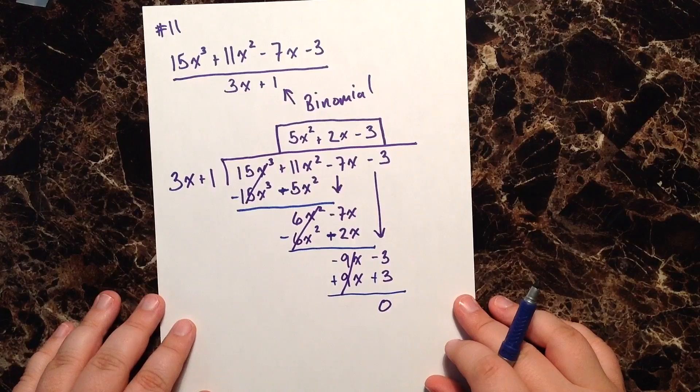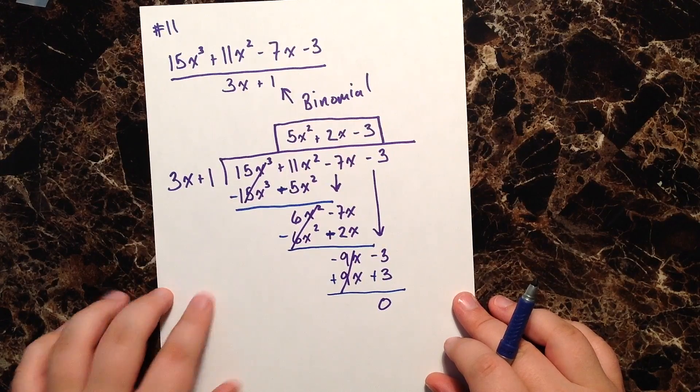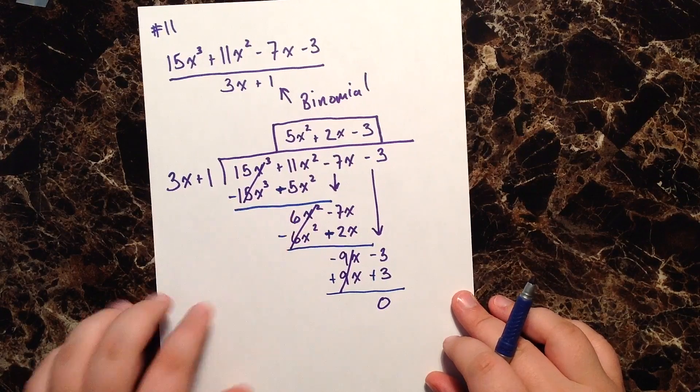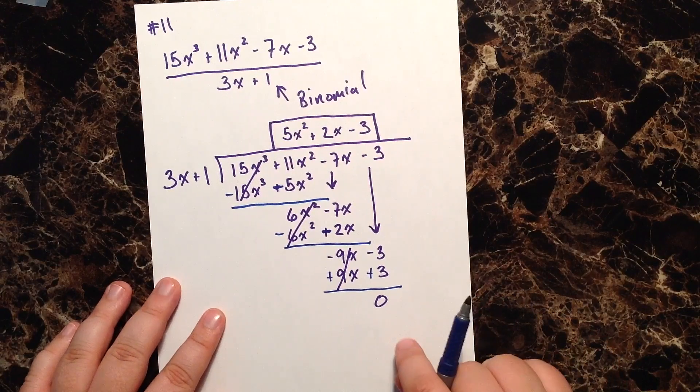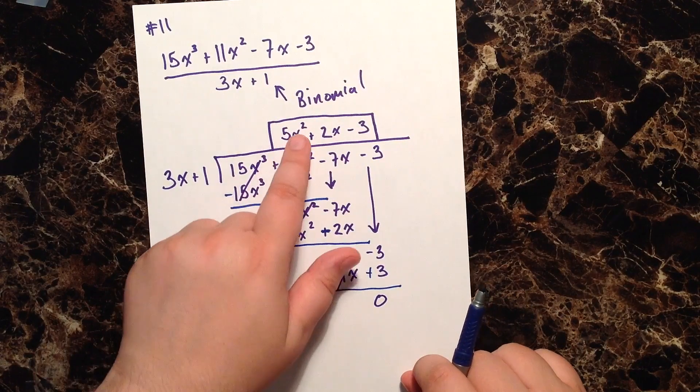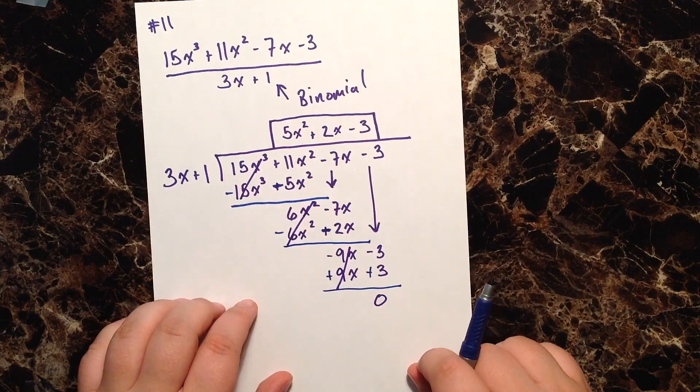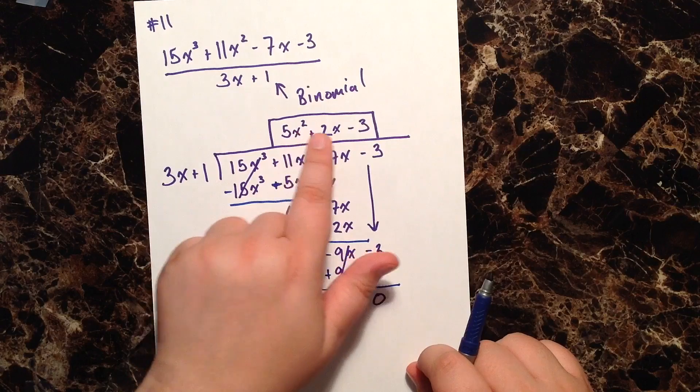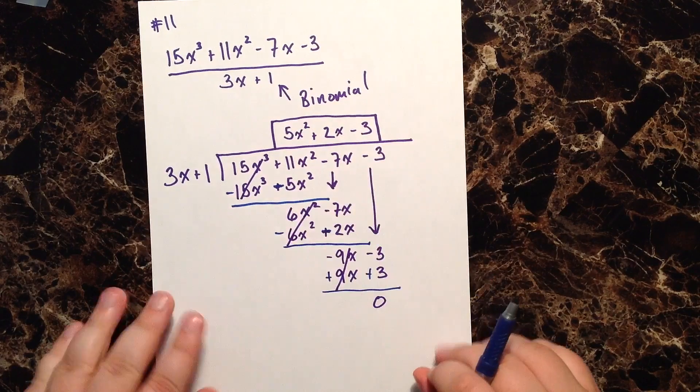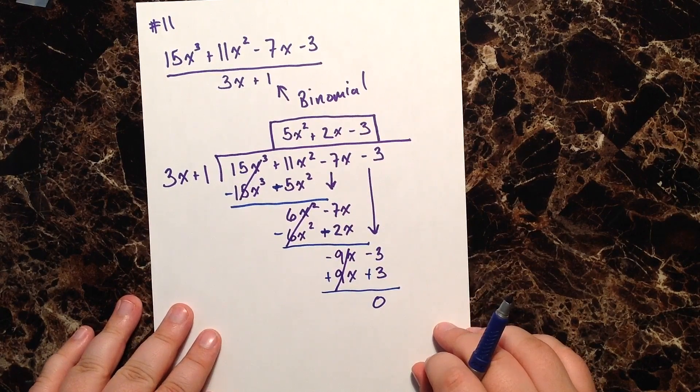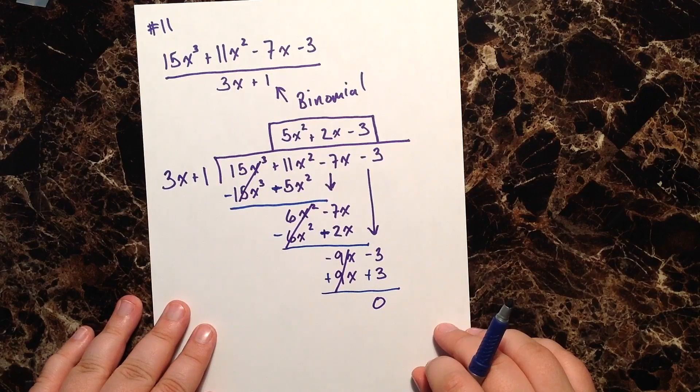And ultimately we want to make sure that our answer, you can see also, is in descending degrees, so we have 2, 1, 0. And again just make sure that you follow the steps and I think you're going to be just fine.